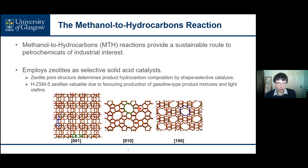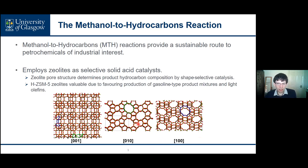For example, the zeolite demonstrated here is ZSM-5, which is a medium pore zeolite with a pore structure consisting of intersecting straight and sinusoidal channels with approximately five and a half angstroms in diameter, which results in a product mixture high in gasoline range alkenes, light alkenes and aromatic molecules, all of which are valuable commercial products.